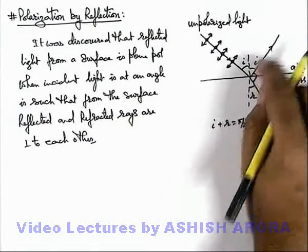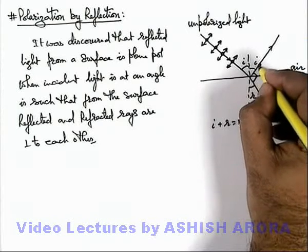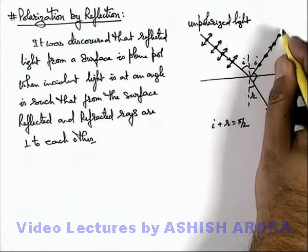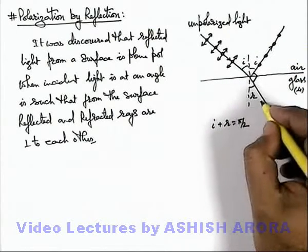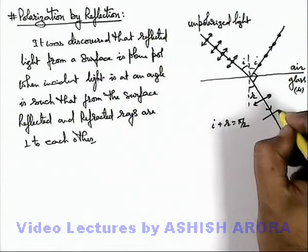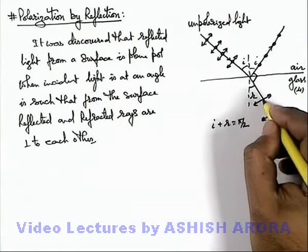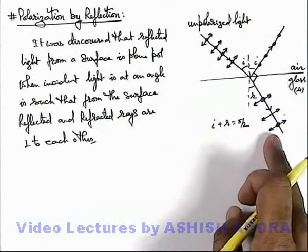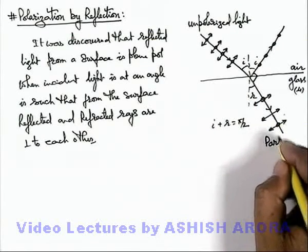Then it is observed that the reflected ray is plane polarized, consisting only of oscillations of electric field which are perpendicular to the plane of incidence. And the light which is refracted is partially polarized, meaning it consists of electric field oscillations in the plane of incidence as well as unpolarized oscillations.